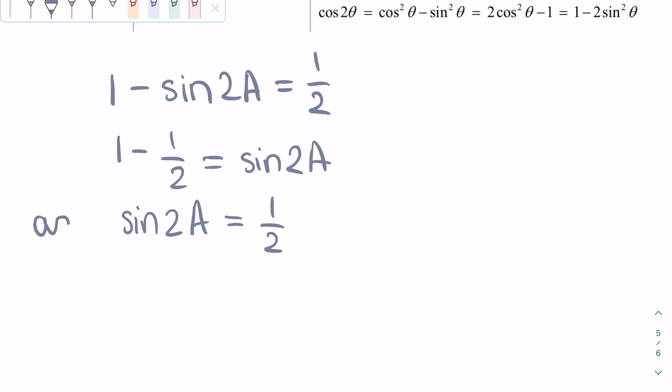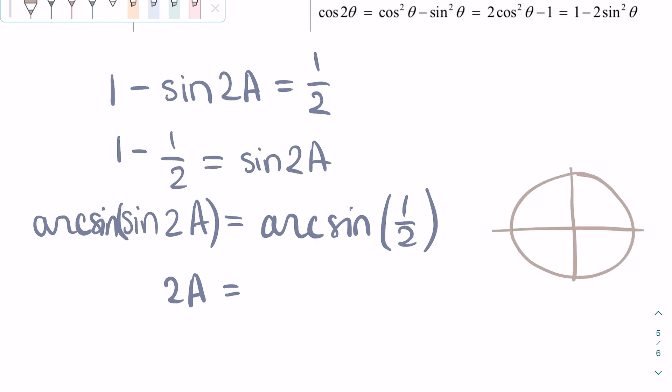We can then take the arc sine, or the opposite function of sine of both sides, and we get 2A, do not forget to write the 2A instead of just A, is equal to arc sine 1 half. If you remember, there are two values for arc sine 1 half.